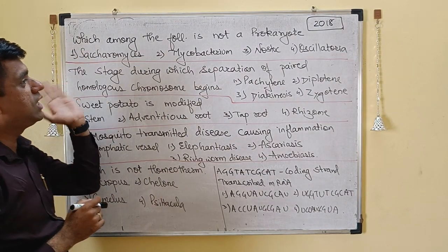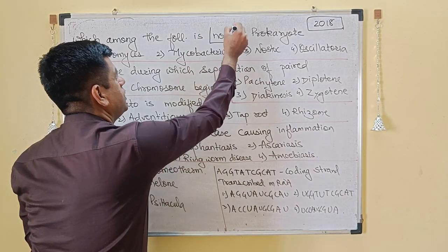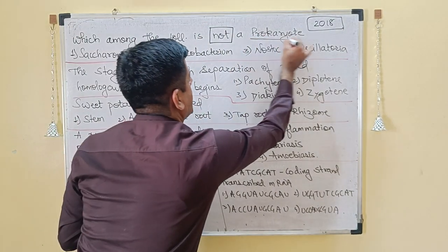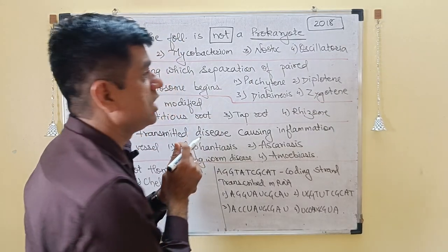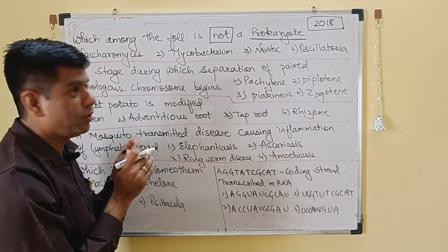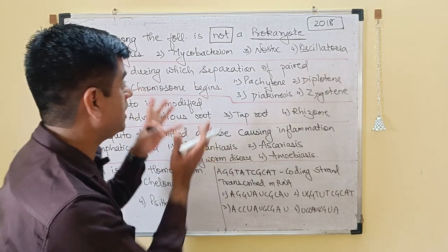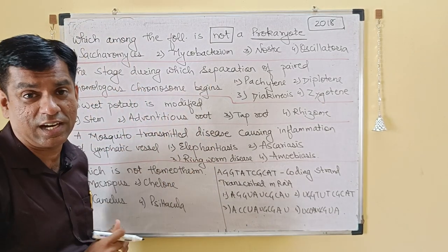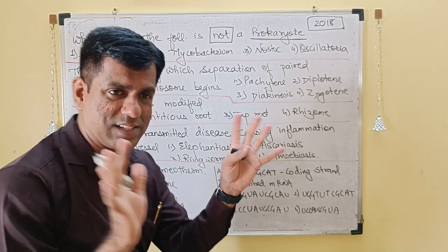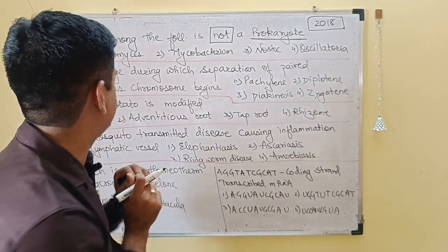Which of the following is not a prokaryote? The keyword here is 'not a prokaryote' — the one which does not have a well-defined nucleus. All prokaryotes, your eubacteria and archaebacteria, they come in this category of prokaryotes. So basically all bacteria, they are prokaryotes. So we have to find out which one is not.